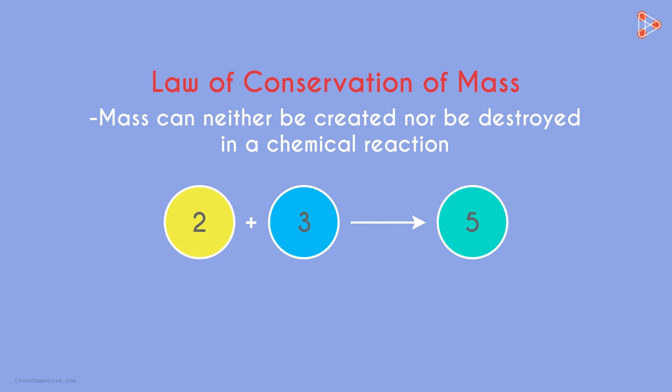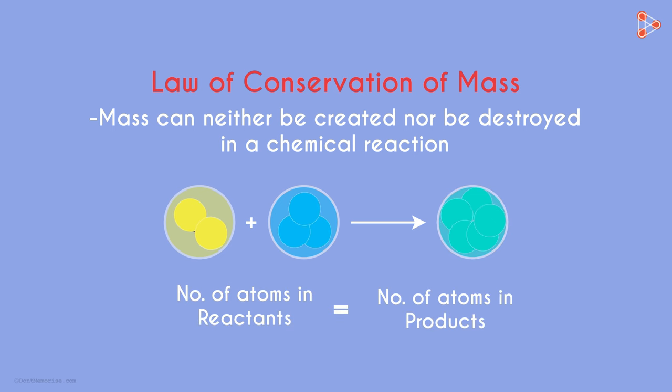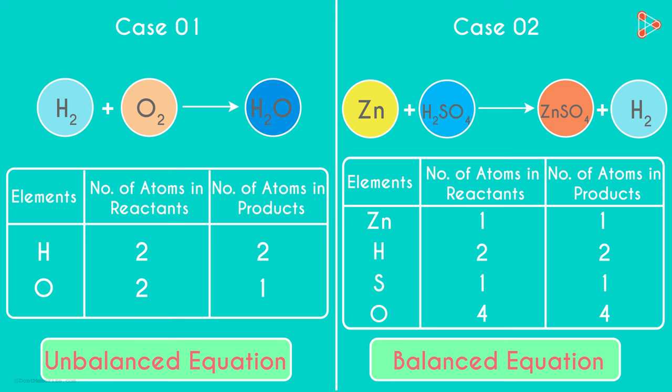In layman terms, the number of atoms of each element must be the same before and after the chemical reaction. Hence, we say that the first chemical equation is unbalanced. Can we balance this equation though? Yes, we can balance an unbalanced chemical equation. How can we do that? We will see that next.